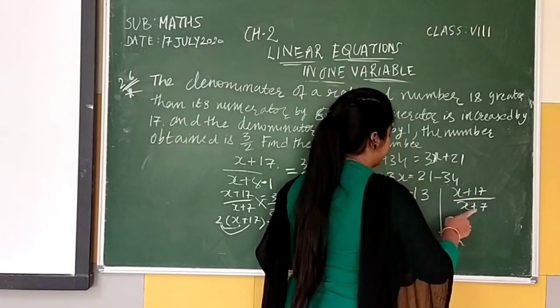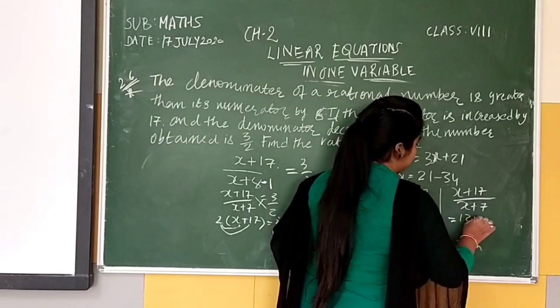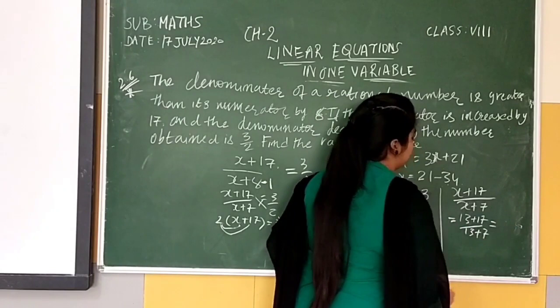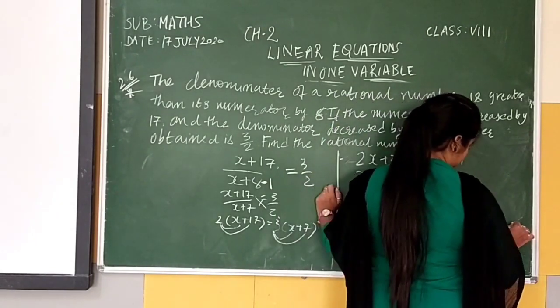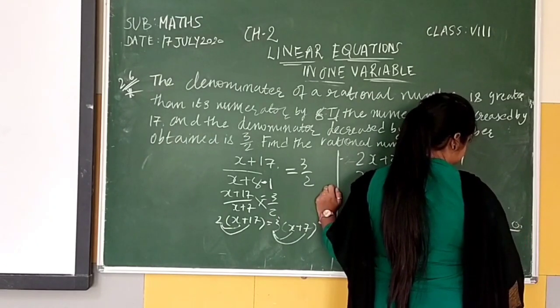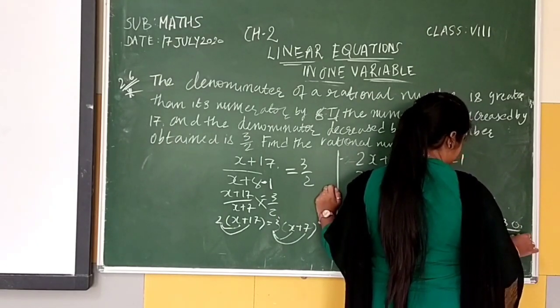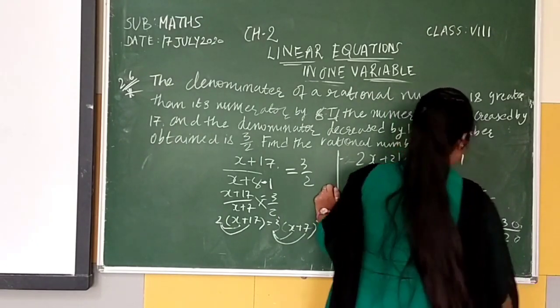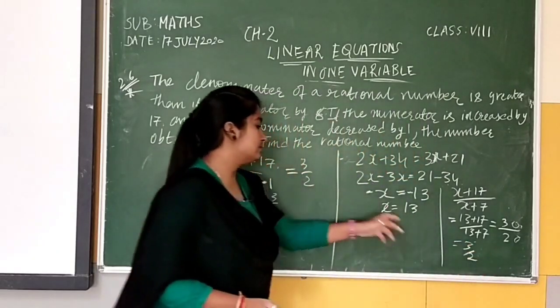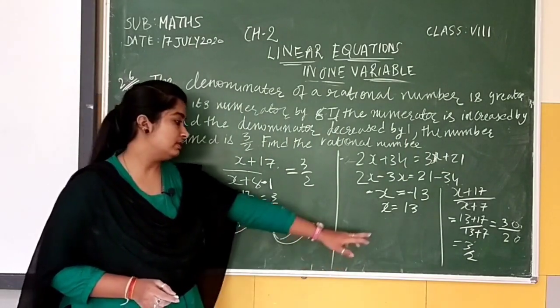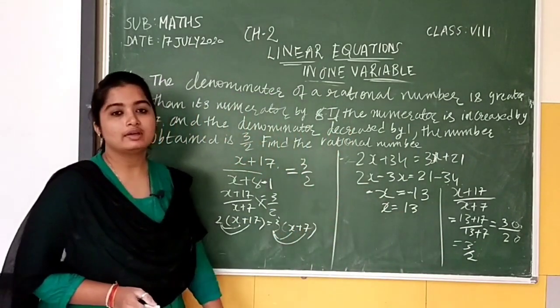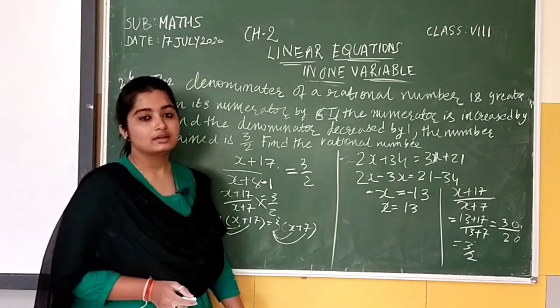Then, X equals 13, so 13 plus 17 upon 13 plus 7, it will be 30 upon 20. We can also cross-verify our answer is correct or not. We will get 3 by 2 as answer. Here we have also 3 by 2. So our sum is correct.